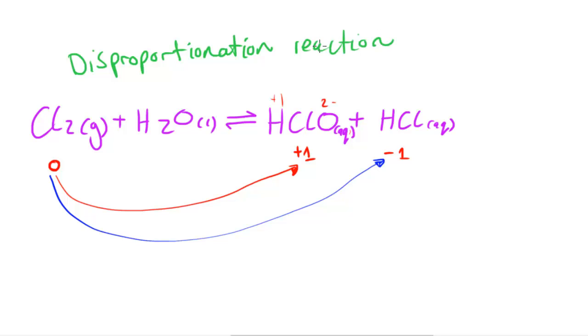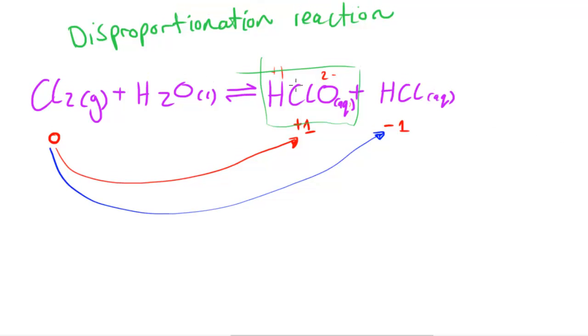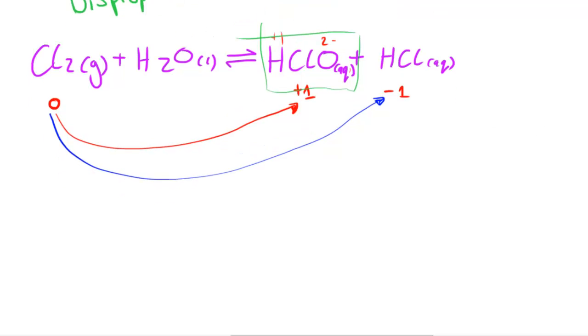Since chlorine has been both oxidized and reduced, and in this reaction, the HClO which is produced can actually kill bacteria by oxidizing different parts of the bacterial cells.